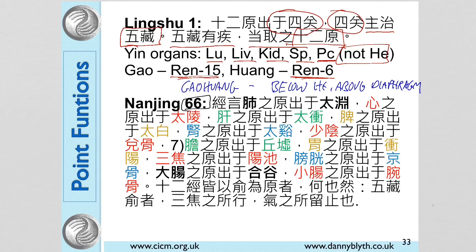The Nan Jing, Difficulty 66, lists the Yuan source points more familiar to us today. It lists 12 source points again — including Liver with its name Taichong — using the names we are more familiar with. The only exception is that the Heart is called Xiao Yin and its point is listed as Duygu — 'protuberant bone' — which is an alternative name for Heart 7. The Heart points were not fully discussed until the Jia Yi Jing, around 300 AD.